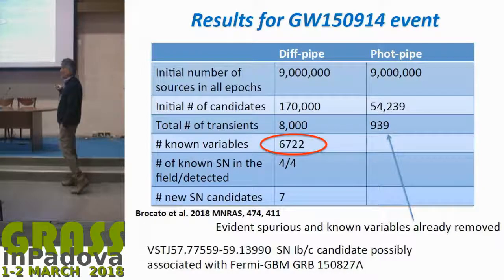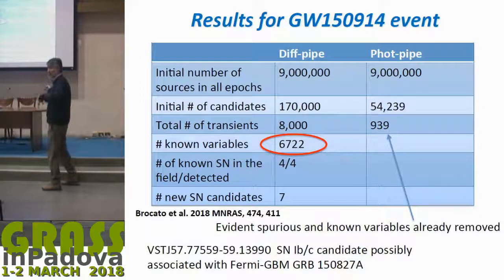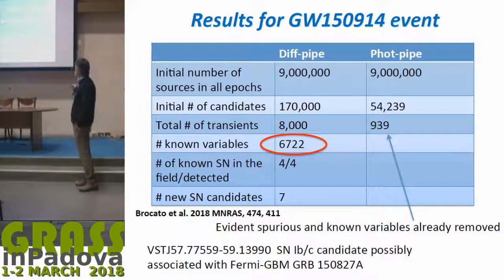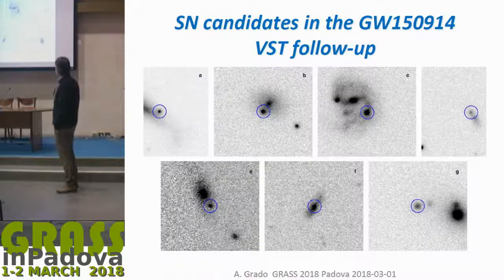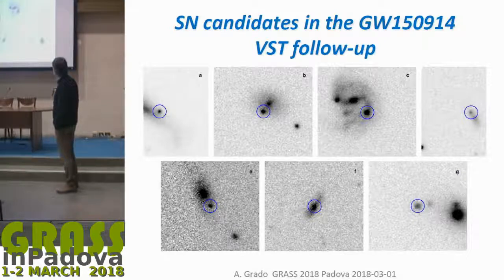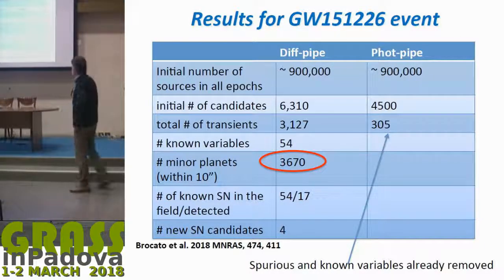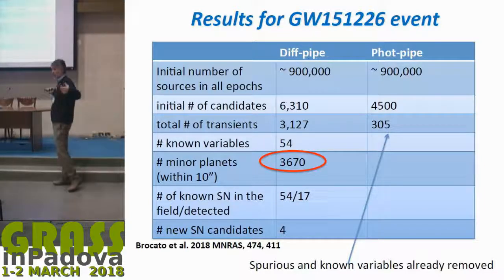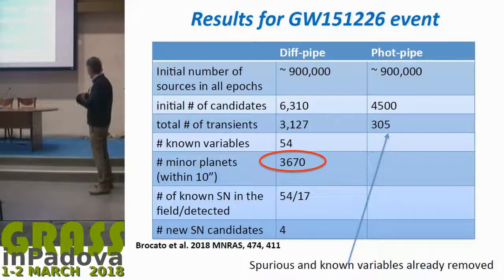To give some numbers: for the first event we started from nine million sources in the catalog. After the first search there were 170,000 variable objects. After cleaning, we ended up with 8,000, and 7,000 were known variable objects — plus some supernovae discovered in the field. For the second event, similarly, there were not as many variables but a lot of moving objects because we were observing near the ecliptic. You really need catalogs to remove all these spurious objects.